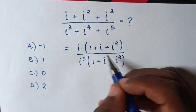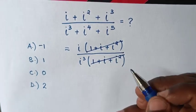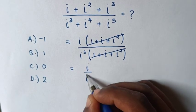The expressions inside the brackets are the same, so they cancel. This equals i over i³.